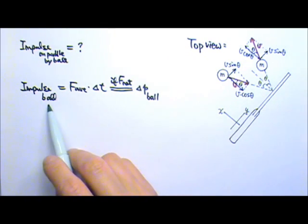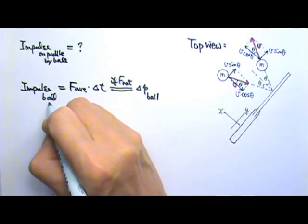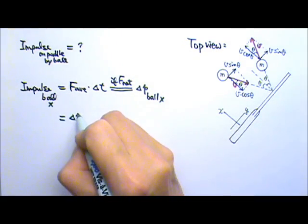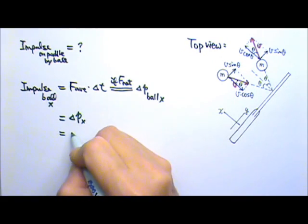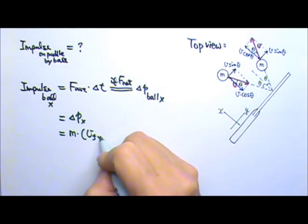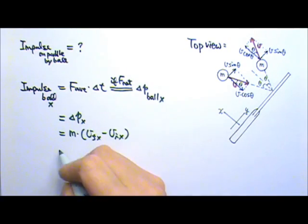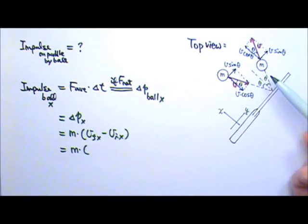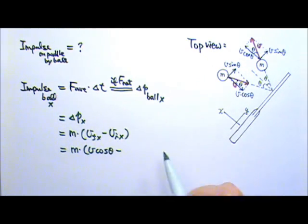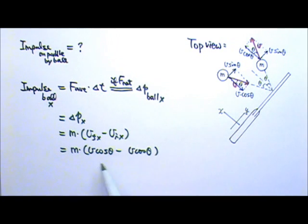So to find the impulse on the ball, we only need to find the impulse on the ball in the x direction, the x component. So this is the changing momentum in the x direction. That would be m times the changing velocity, which is the final velocity's x component minus the initial velocity's x component. So that's m times, the final velocity's x component is v cosine theta, the initial velocity's x component is also v cosine theta. Are you correct?